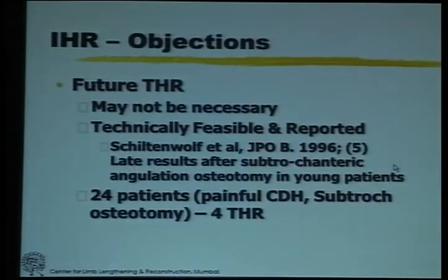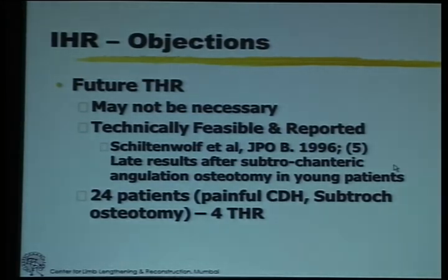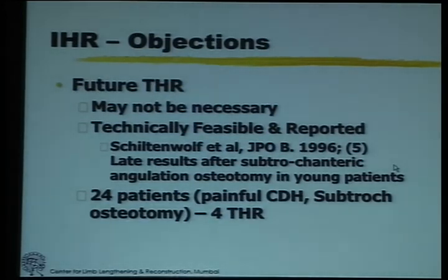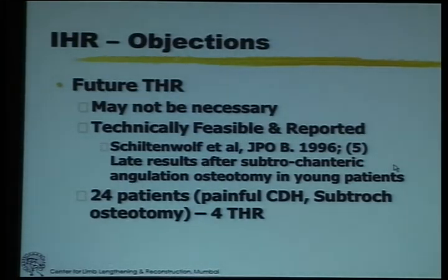One of the objections to Elisarov hip reconstruction, especially in today's age in metro cities, is the preference for arthroplasty. When I was in the UK there used to be a joke that the indication for an arthroscopy was that the patient doesn't have an above-knee amputation — that's how freely arthroscopy was done. Unfortunately, that is what is happening with arthroplasty today. But 18 or 20 years old is not the age for an arthroplasty, especially in our socio-economic situations.